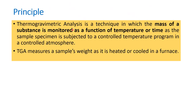So what is the principle? TGA, in short form, is a technique in which the mass of the substance is monitored as a function of temperature or time, as the sample specimen is subjected to a controlled temperature program in a controlled atmosphere. A controlled atmosphere means it can be in the presence of an inert gas such as nitrogen or helium.